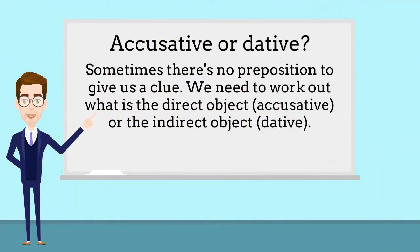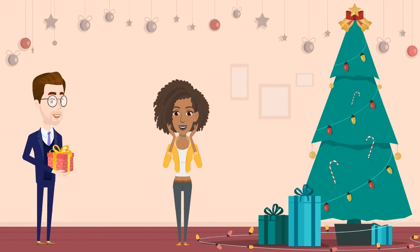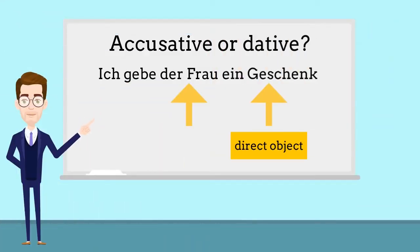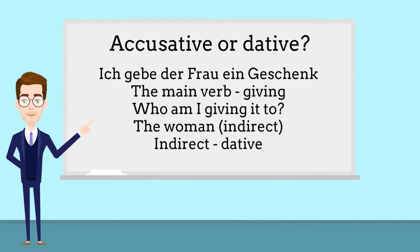Sometimes there's no preposition to give us a clue, so we need to work it out another way. Ich gebe der Frau ein Geschenk. The main verb in the sentence is 'giving'. What am I giving? I'm giving a present, so a present is the direct object and accusative — it's neuter, so it doesn't change. The dative case usually shows to or for whom the action is taken, so I'm giving the present to the woman — the woman is the indirect object, which is the dative.